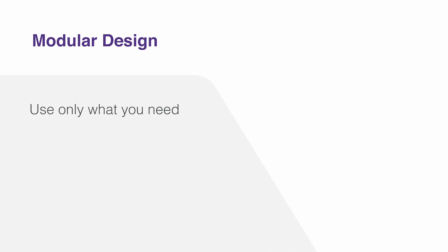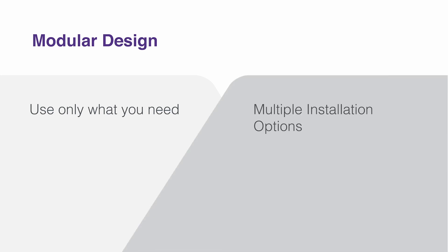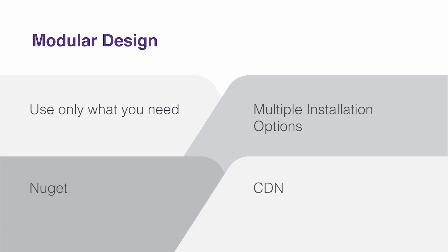Telerik UI for ASP.NET Core is designed to be modular. As we'll see in this course, you can use only the components that you need in order to keep your code base as light as possible. It also gives you options on how components are included in your application. In this course, we're going to include the server-side components using a NuGet package and the client-side components using an archive downloaded from your account. But you can also include the client-side libraries using a content distribution network or CDN.